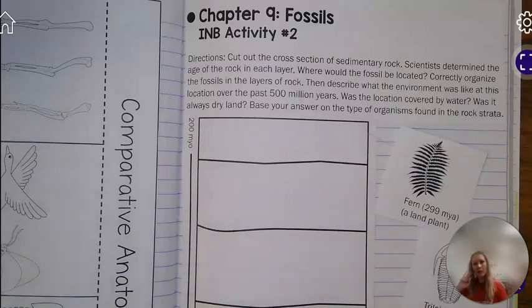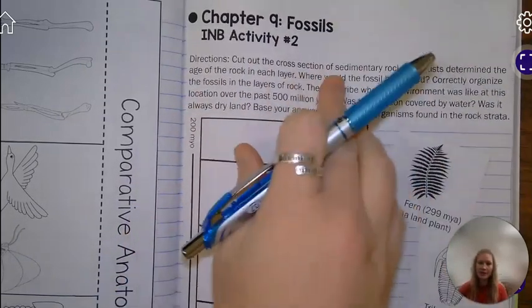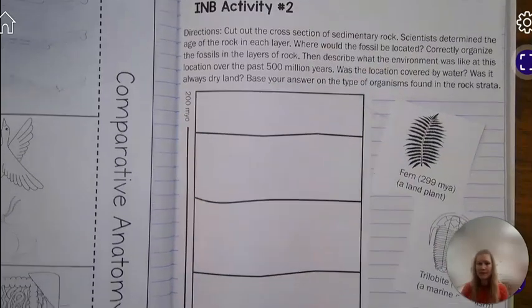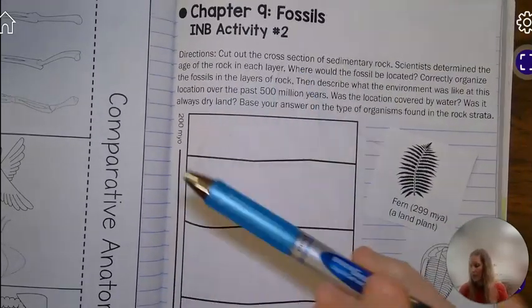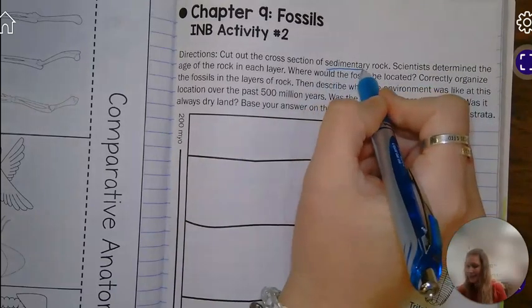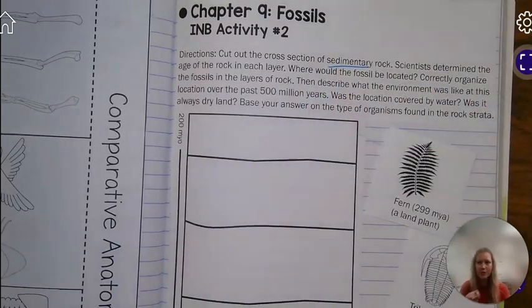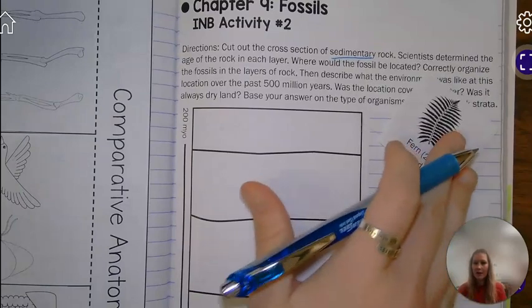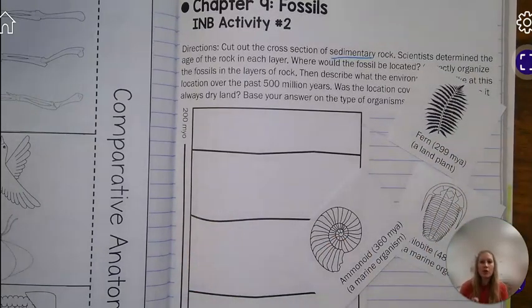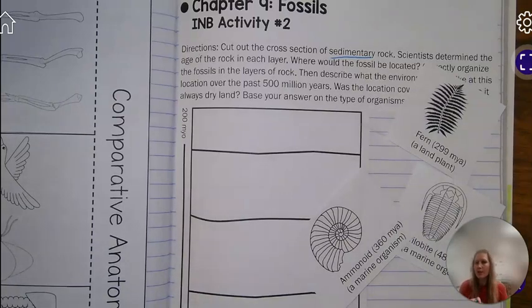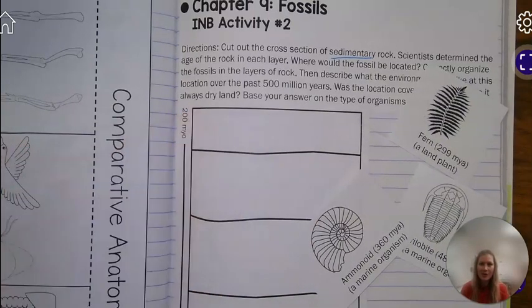So for this foldable, I have cut out the left side, which is my cross-section of sedimentary rock, because that is mostly where I find fossils. And then here I have cut out the three fossils. If you have not done so already, make sure you pause this video and get your notebook set up before you continue.